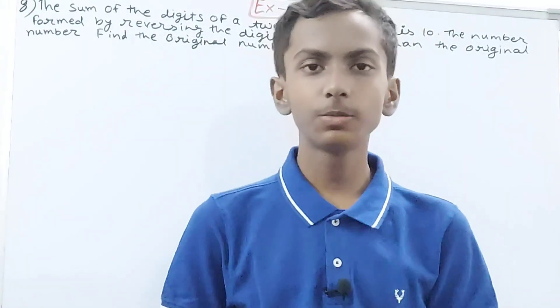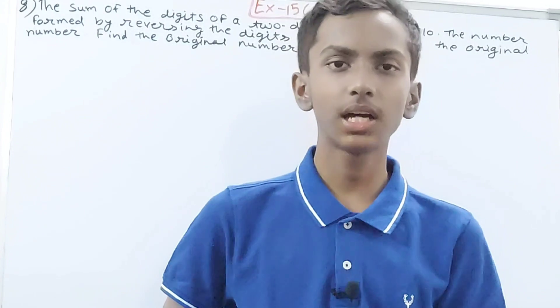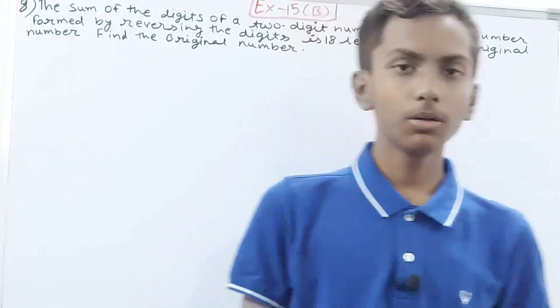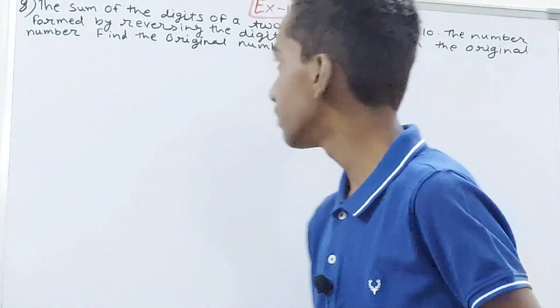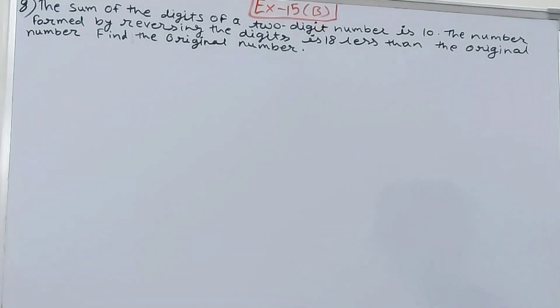Hello friends, welcome back to my YouTube channel 'Unlock Your Learning.' In this video we are going to solve ICC Mathematics Class 8, Chapter 15, Exercise 15b, Question number 8. The question is: the sum of the digits of a two-digit number is 10. The number formed by reversing the digits is 18 less than the original number. Find the original number.